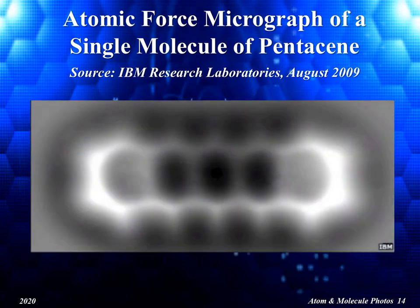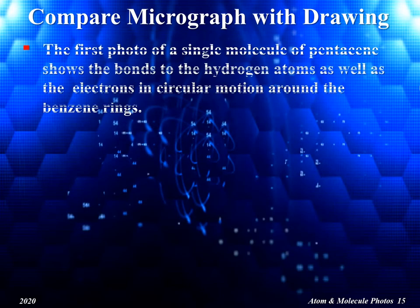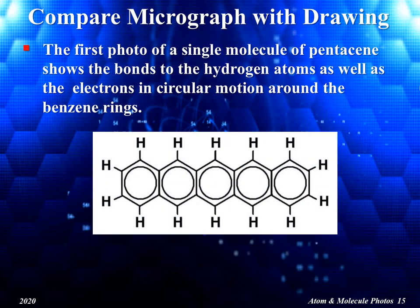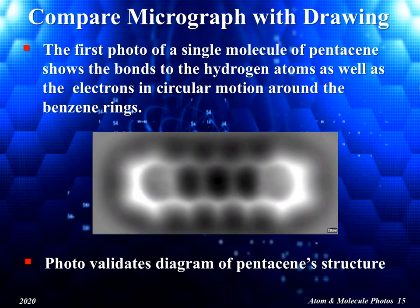This photograph of a single molecule of pentacene was taken with the atomic force microscope in 2009 at the IBM Research Laboratories. Now let us compare the photograph of a single molecule of pentacene with a line drawing of the molecule. This photo shows the bonds to the hydrogen atoms as well as the electrons in circular motion around the benzene rings. As you can see, the photo validates the molecular orbital drawing of pentacene's structure.